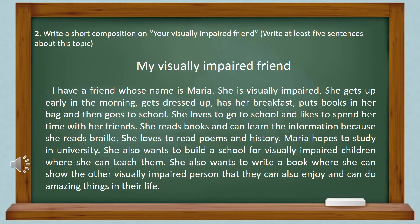In this composition, we can see that the question asks you to describe a friend who is visually impaired. So you have to write a composition with the help of the passage about a friend who is visually impaired.